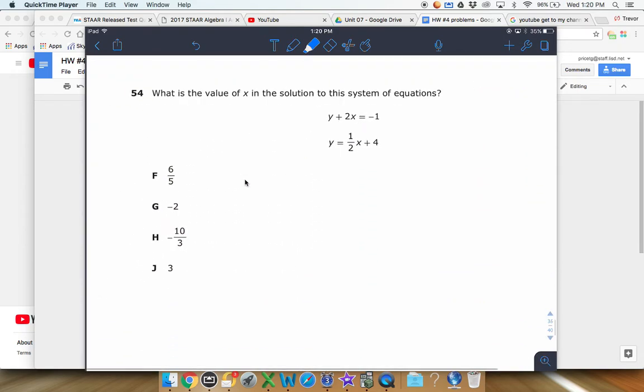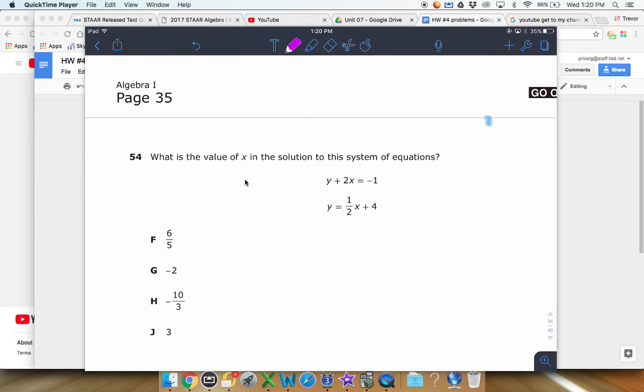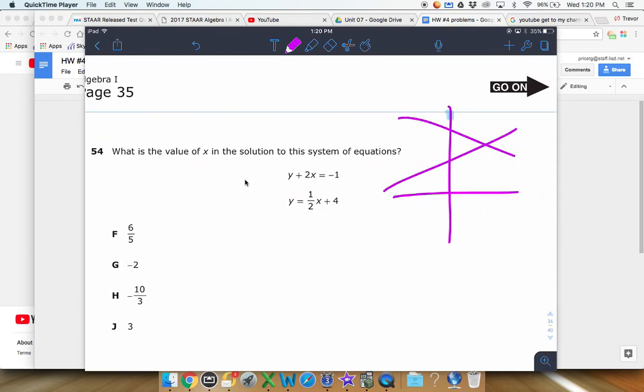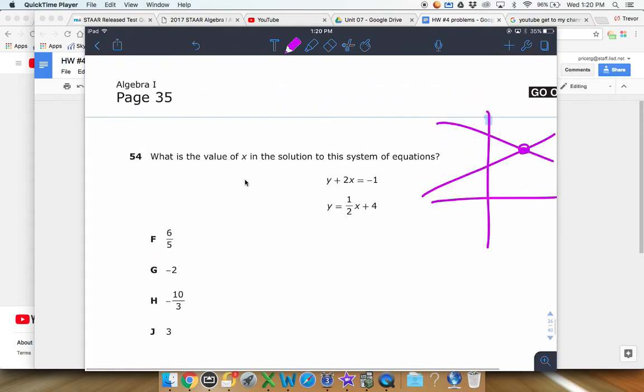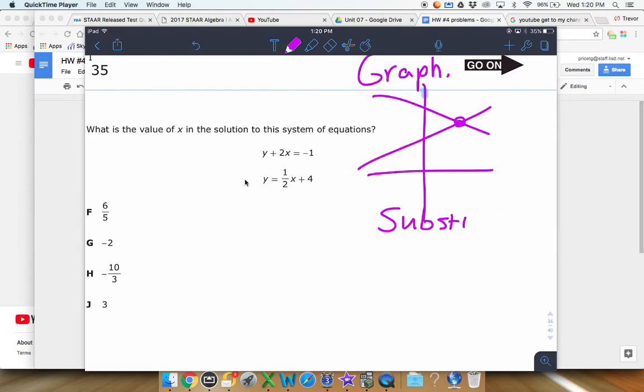Last one: what is the x value in the solution to this system of equations? So with system of equations, there's a couple of different ways you can solve these. You could solve by graphing both and figuring out where the intersection is. If you have them solve for y or if you're able to graph them easily, that's not too bad. Another way you can get your solutions is you can do something called substitution or elimination.